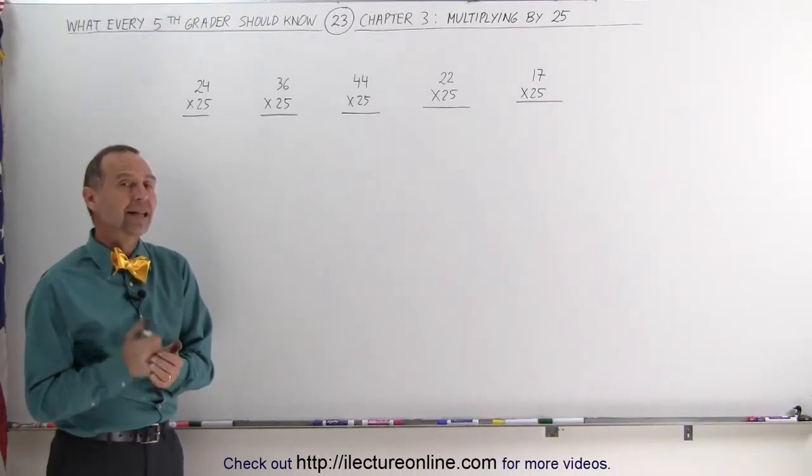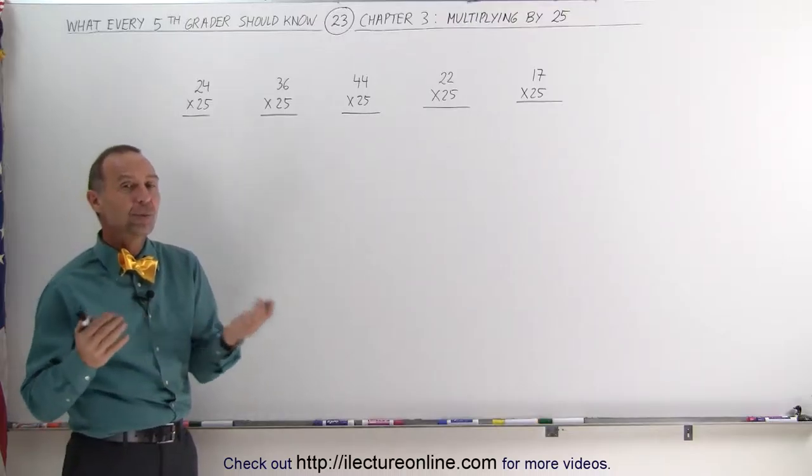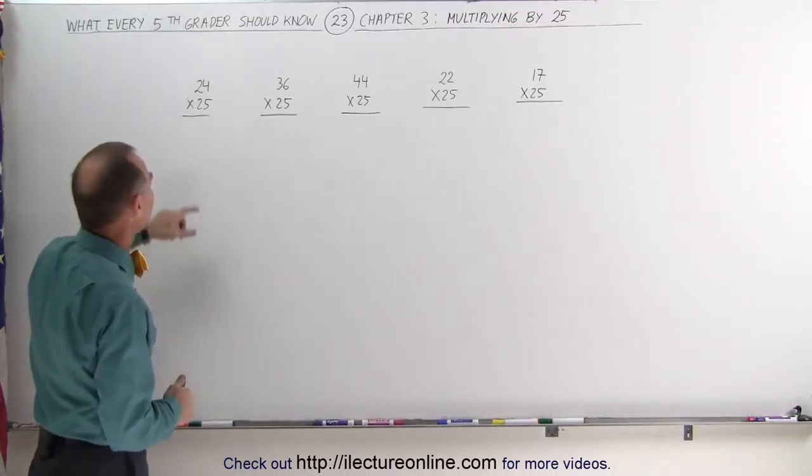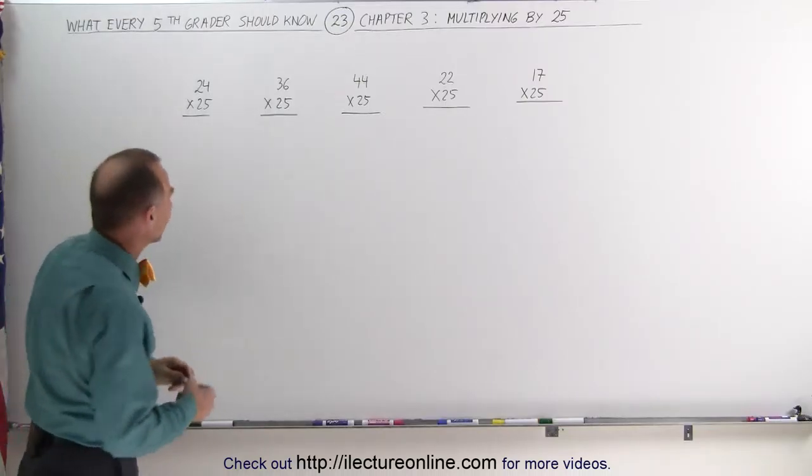Welcome to Electron Online. Now let's try to multiply a two-digit number by 25. And there's a really neat little trick to that. What you do is you take the number and you first divide it by 4 and then you add two zeros to it.